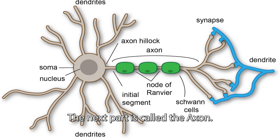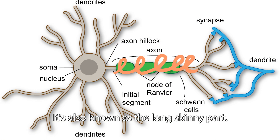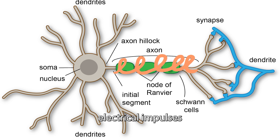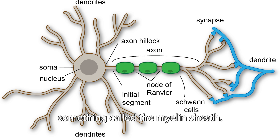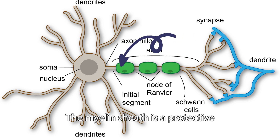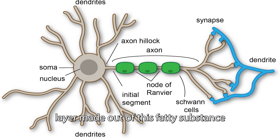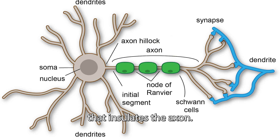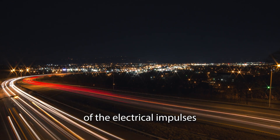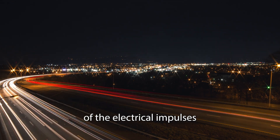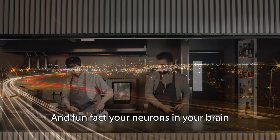The next part is called the axon — also known as the long skinny part. It's the part of the neuron that carries electrical impulses and transmits them to other neurons. The axon is surrounded by something called the myelin sheath, a protective layer made out of a fatty substance that insulates the axon and speeds up the transmission of electrical impulses along it.